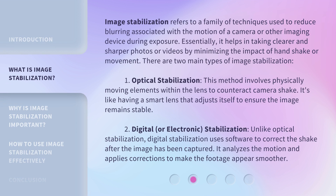Image Stabilization refers to a family of techniques used to reduce blurring associated with the motion of a camera or other imaging device during exposure. Essentially, it helps in taking clearer and sharper photos or videos by minimizing the impact of handshake or movement.